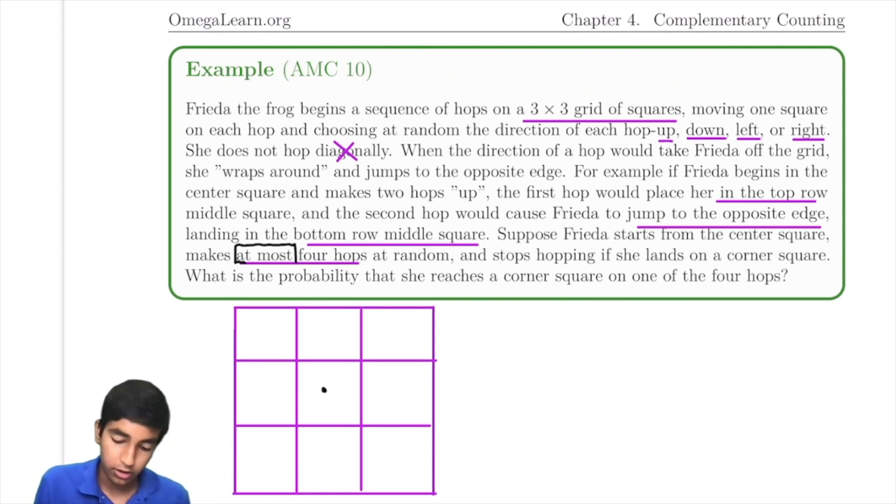So Frida must start at the center. Now Frida has four choices. Four choices, right? So let's just say that there's four times whatever for the first hop.